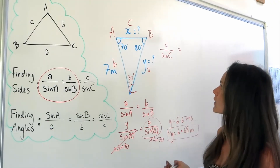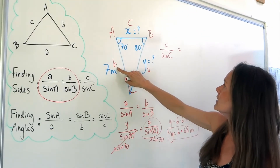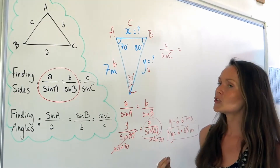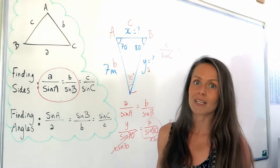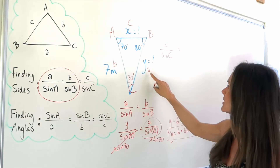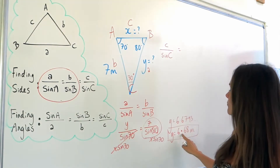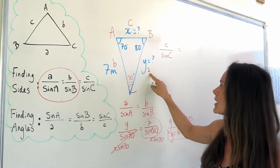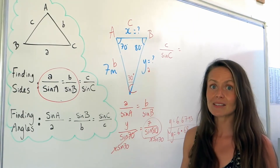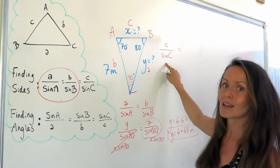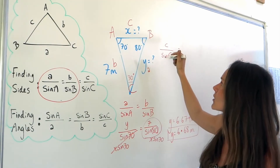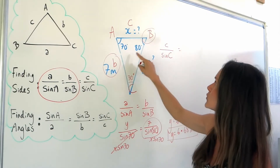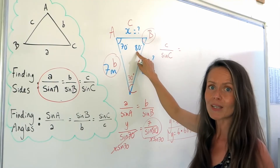I need to choose another pair to set it equal to. I could use B and B or A and A, but it's better to use the values given at the start of the question. The value I calculated for Y was rounded and less accurate, and any mistake there would carry into this part. So I'll stick with angle B and side B because I know those were right from the beginning.